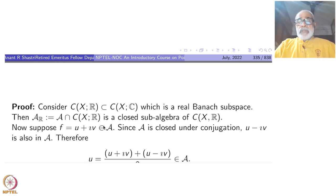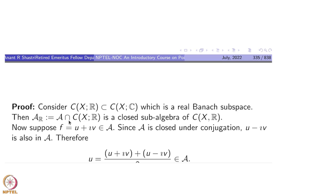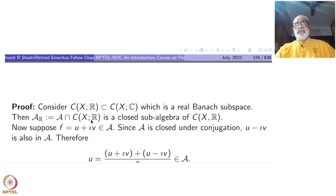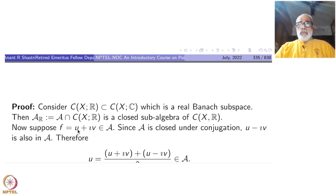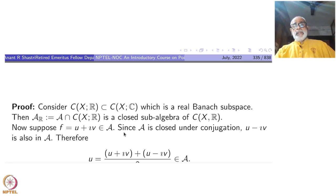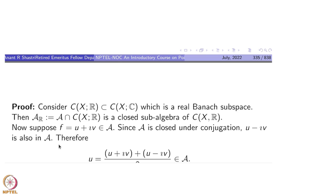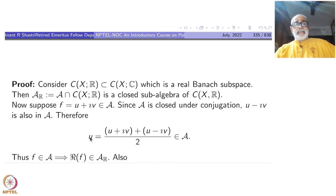Something nice happens because A is closed under conjugation. If I write an element of C(X,C) as f = u + iv, where u and v are the real and imaginary parts inside C(X,R), since A is closed under conjugation, f-bar = u - iv will also be inside A. Therefore their sum divided by 2 will be inside A, and that is nothing but u.